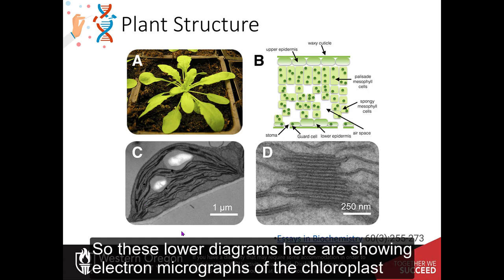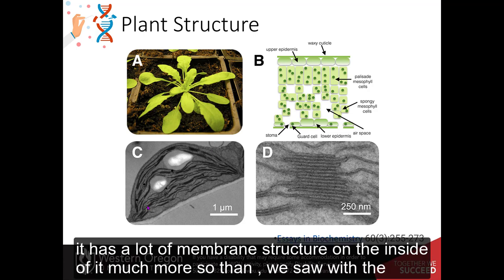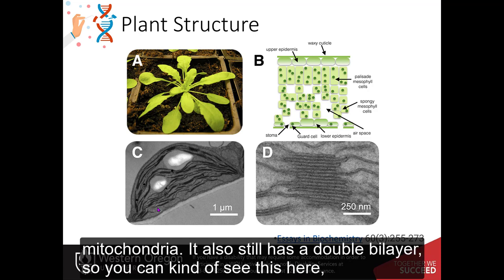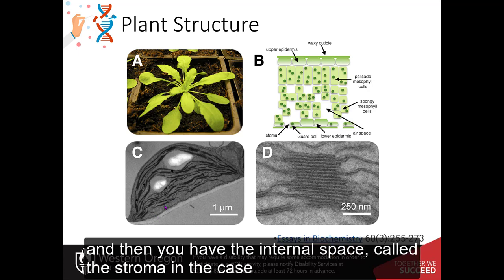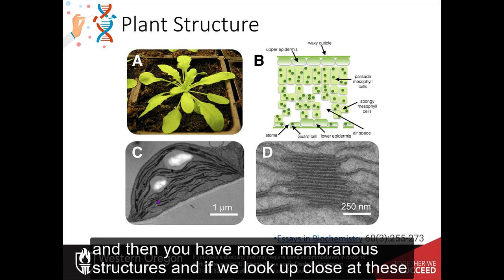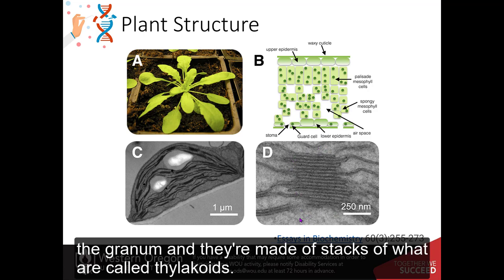So these lower diagrams here are showing electron micrographs of the chloroplast structure. And so this is kind of a cross-section along the chloroplast. And what you can see is that it has a lot of membrane structure on the inside of it, much more so than we saw with the mitochondria. It also still has a double bilayer. So you can kind of see that here. You've got this double bilayer forming. And then you have the internal space called the stroma in this case. And then you have more membranous structures. And if we look up close at these, they form kind of these stacked granular structures. This is called the granum. And they are made of stacks of what are called thylakoids.